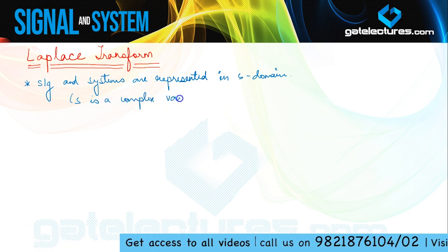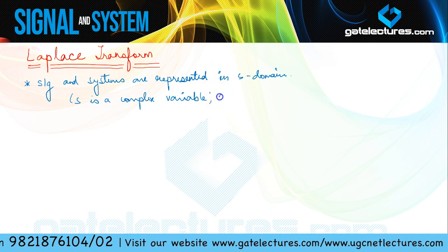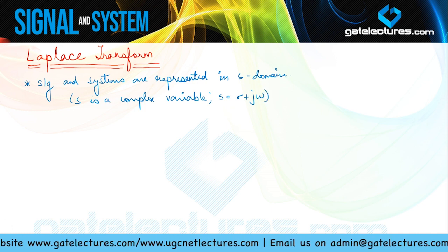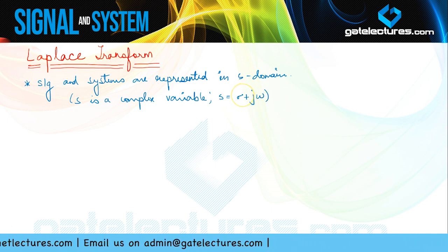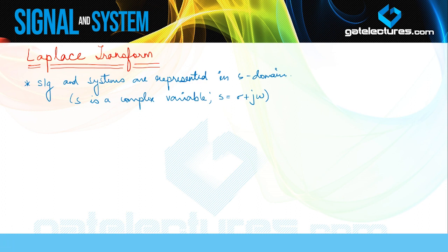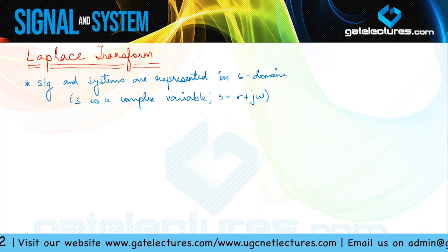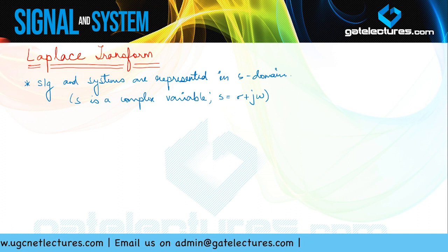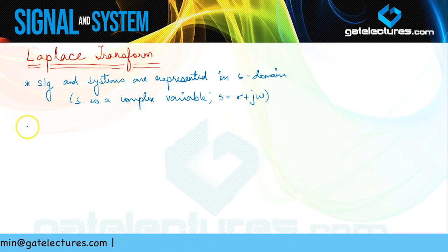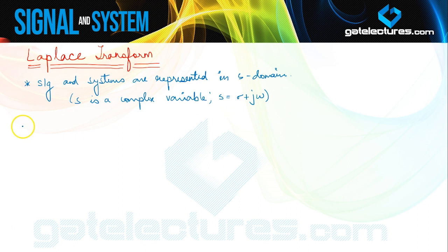What does a complex variable mean? If I need to represent S in terms of real and imaginary parts, I can write it as sigma plus j-omega. So S is a complex variable, and we are introducing the concept of the system function for a continuous LTI system. When we introduce Laplace transform, convolution operation becomes a simple multiplication operation in the S domain. Convolution of two signals in time domain is equivalent to multiplication in S domain — that is the reason why we study Laplace transforms.